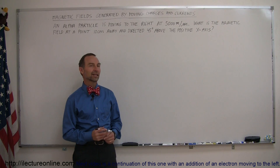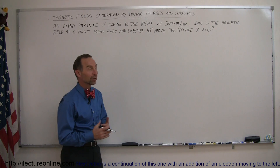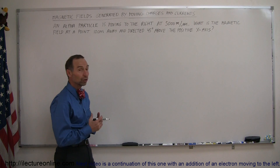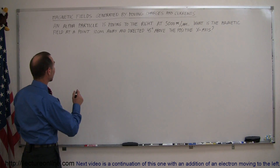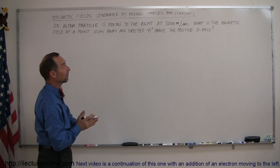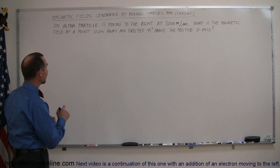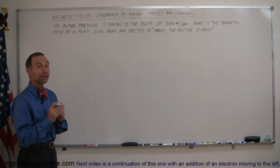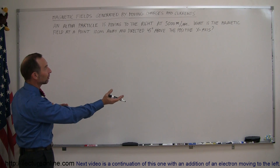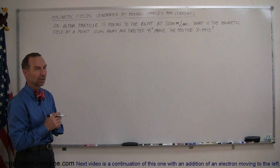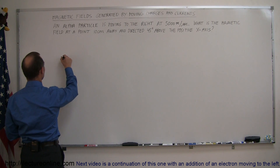Welcome to ElectronLine. Here's our second example of how we find the magnetic field caused by a moving charge. Just like in the first example, we have an alpha particle that's moving to the right at 5,000 meters per second, and we're supposed to find the magnetic field located 10 centimeters away, but this time at an angle directed 45 degrees above the positive x-axis. So let's make a drawing of that and see what it looks like.